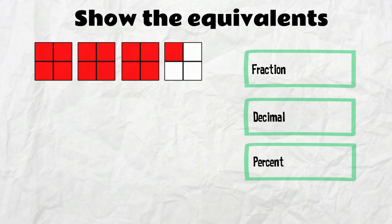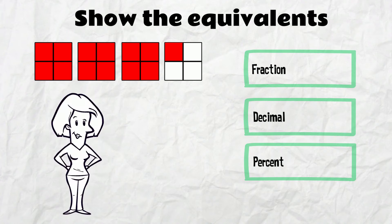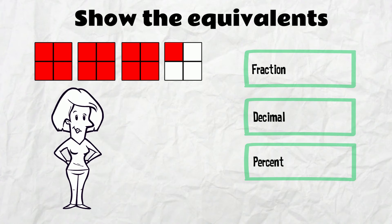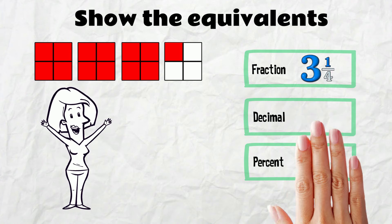This one's a bit different. We've got 3 whole ones and 1 quarter red. You know how to show this as a fraction! It's a mixed number! 3 and 1 quarter.